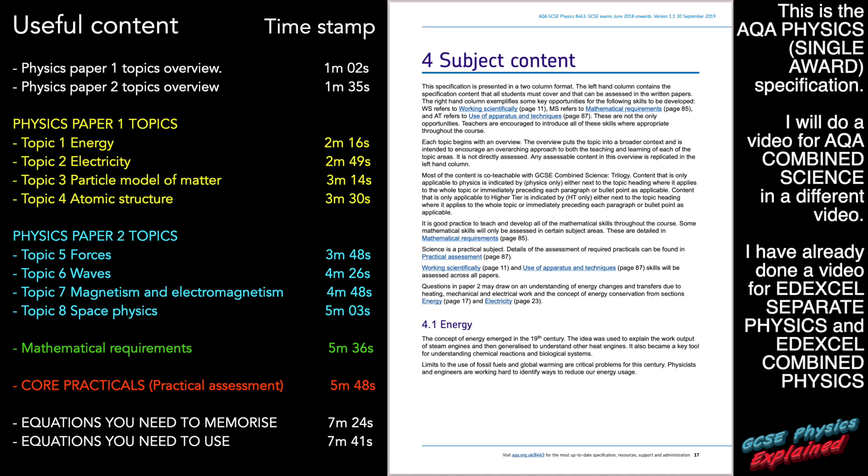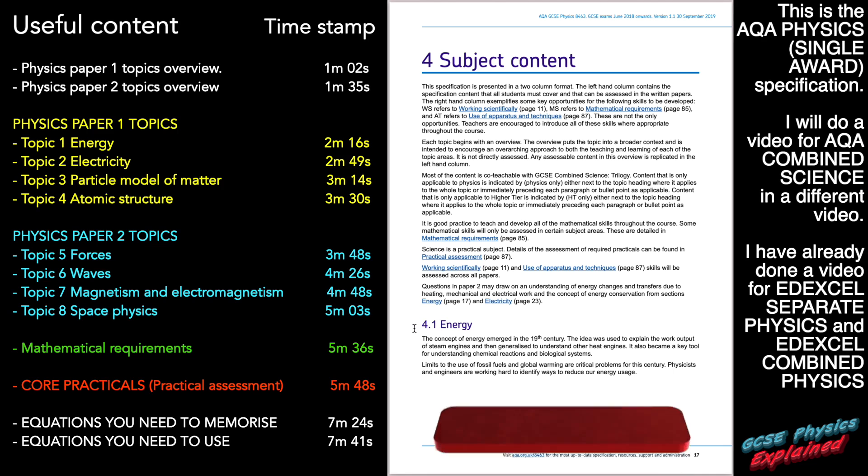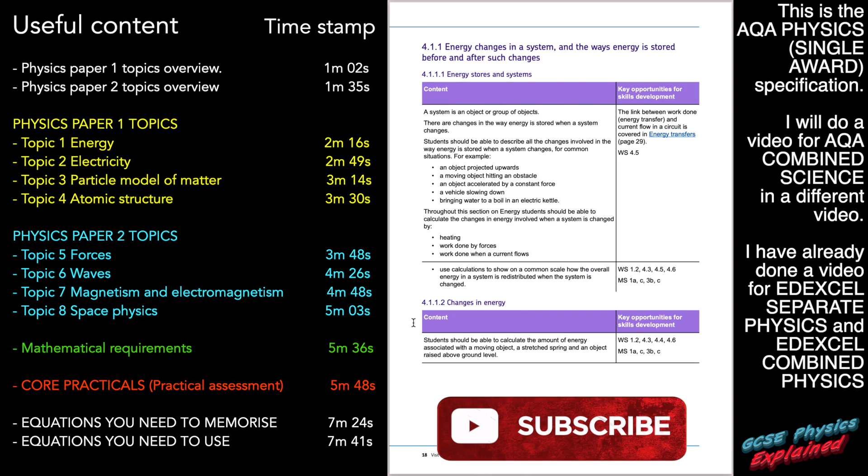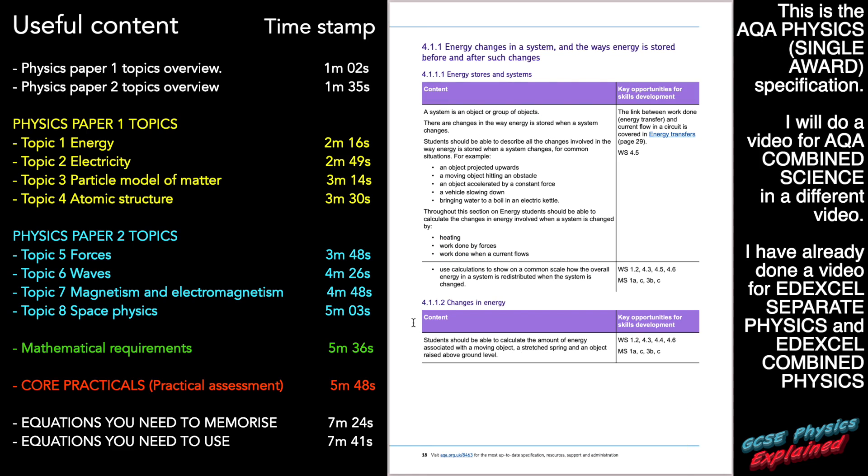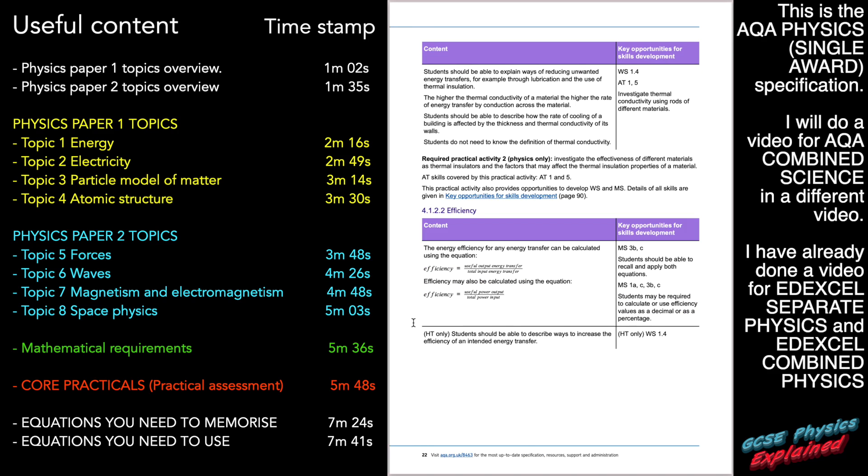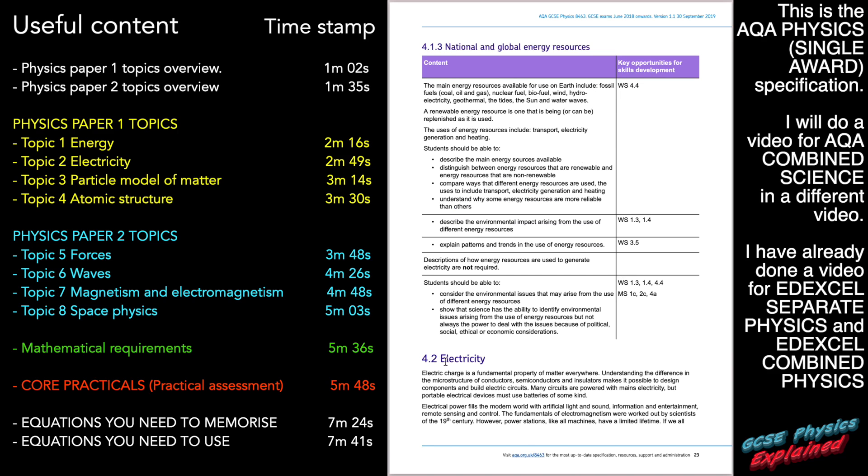Okay, let's get down to the nitty gritty. So here's the subject content. It's only got a four on the front here because it's part four of the specification. This is topic number one, energy. So you can just ignore the number four on the front each time. So this is what is going to be on paper one. Make sure that you've learned this. Okay, here's topic two, electricity, which is also tested on paper one.